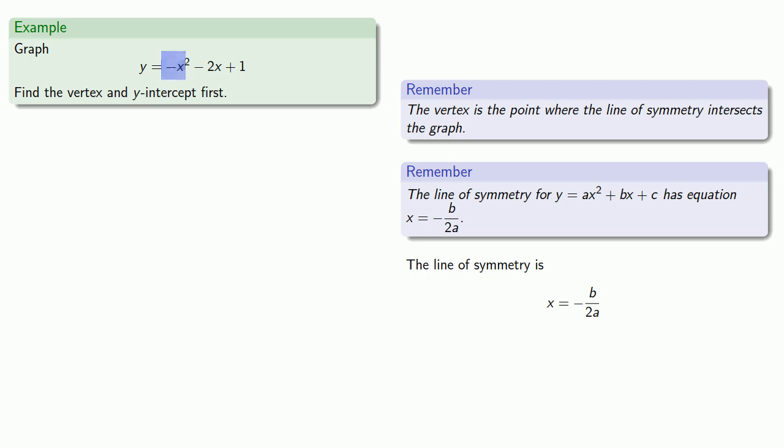Placing those in our formula and simplifying gives us x = -1 as our line of symmetry, and this x-value will be the x-coordinate of the vertex. So the vertex is located at x-coordinate -1.